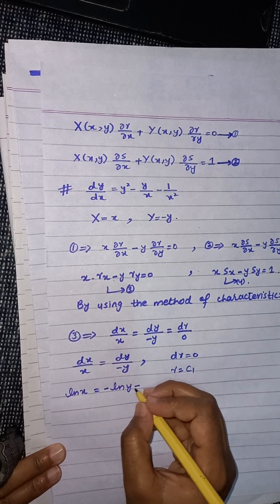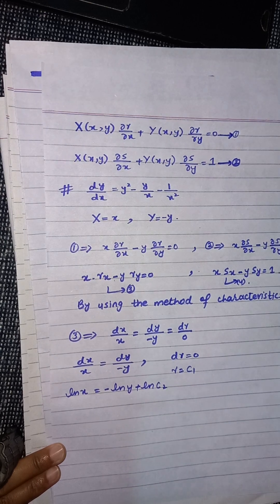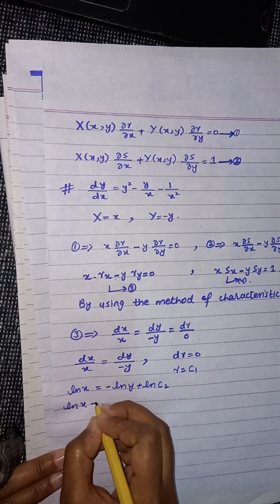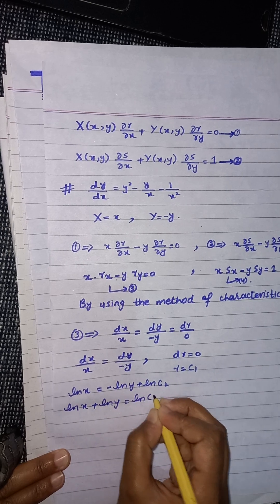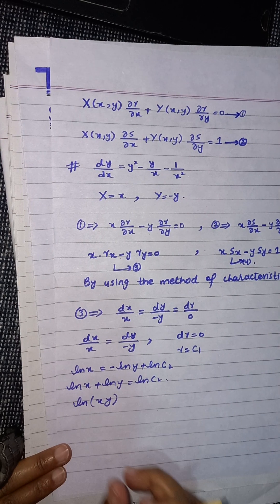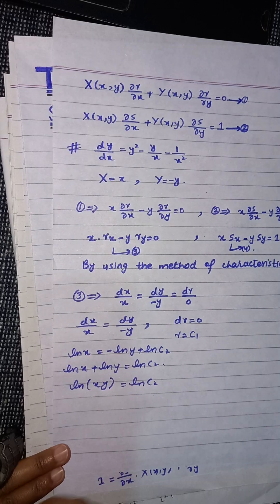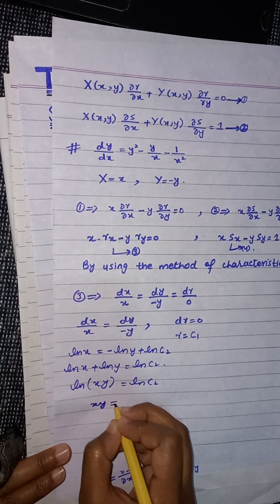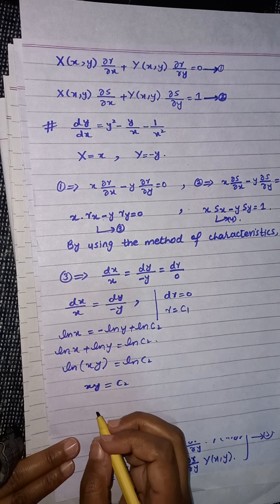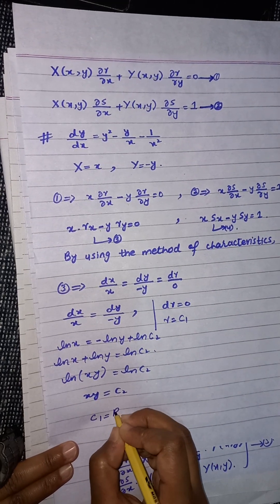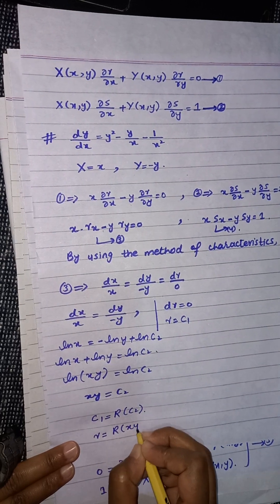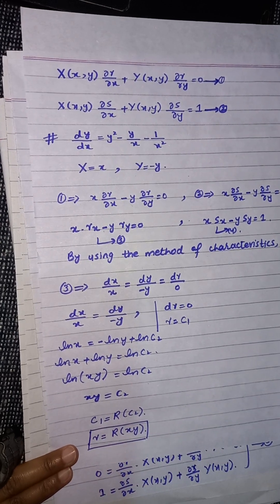From the first pair, we get natural log of x equals minus natural log of y plus natural log of c₂. Taking the natural log of y to the other side gives ln(x) plus ln(y) equals ln(c₂). By the logarithm property, adding logarithms means multiplying their arguments, so taking the exponential on both sides gives x·y equals c₂. By the method of characteristics, c₁ equals r(c₂), so r equals r(xy). This is our first canonical variable.